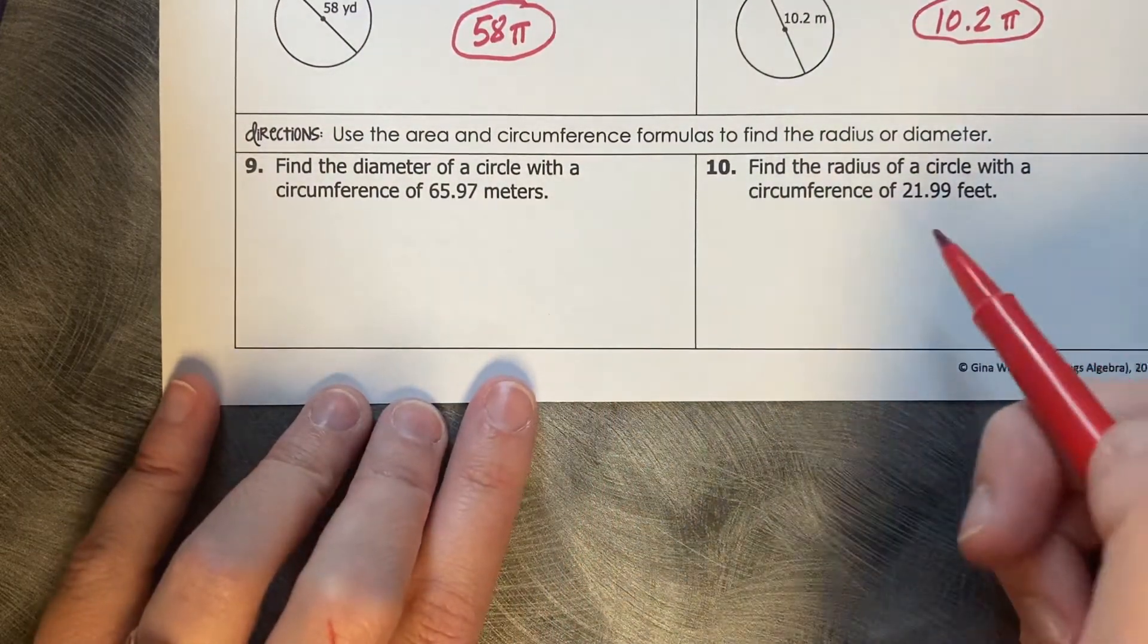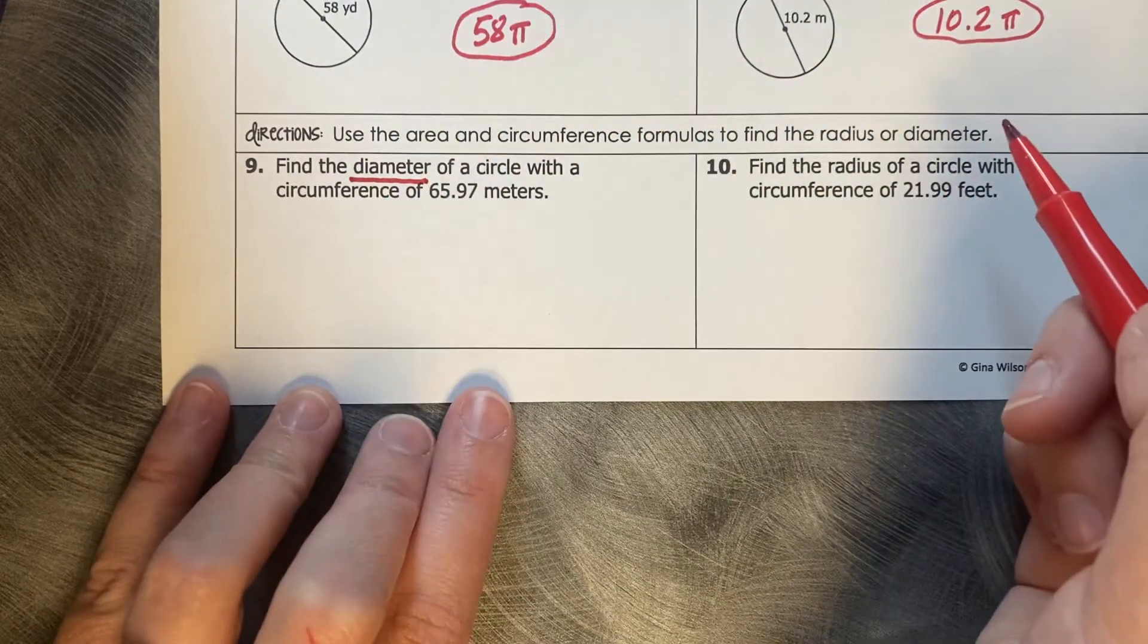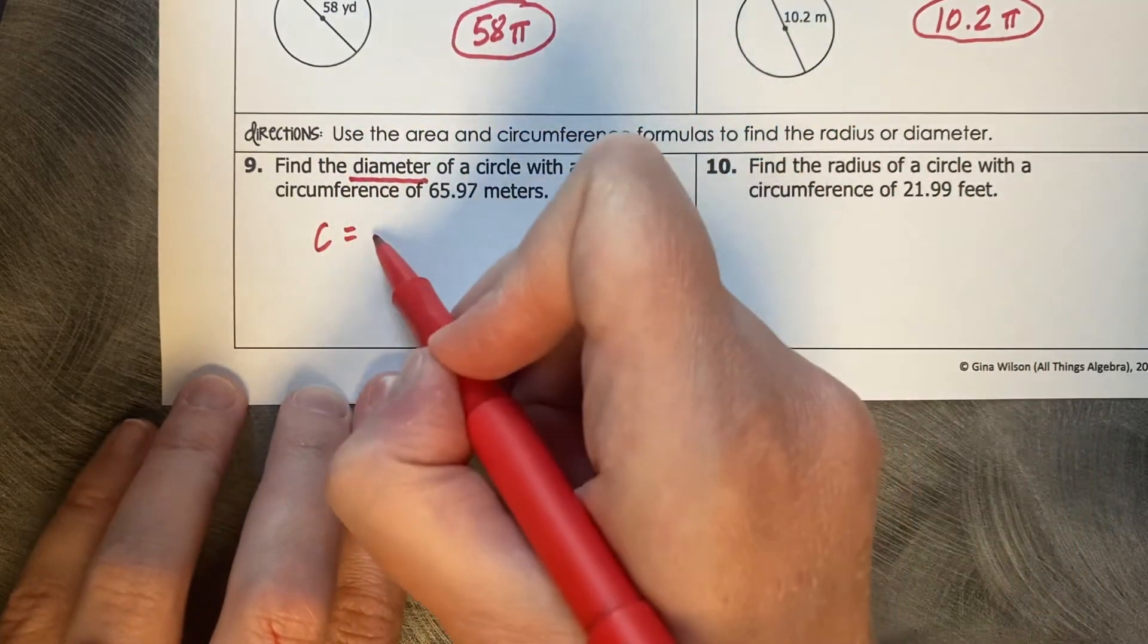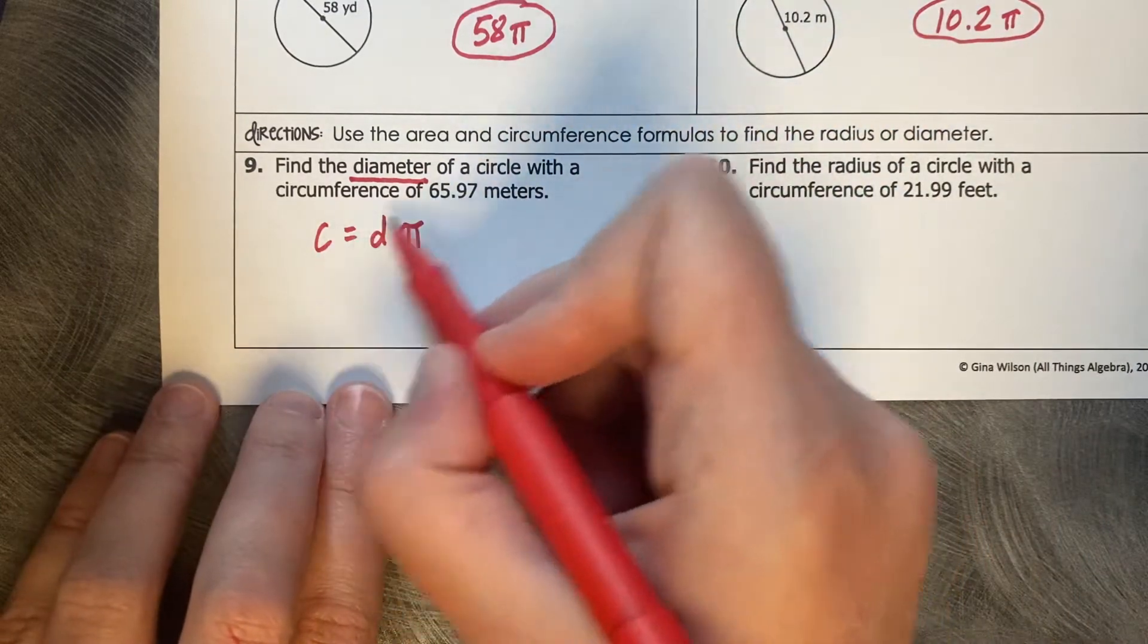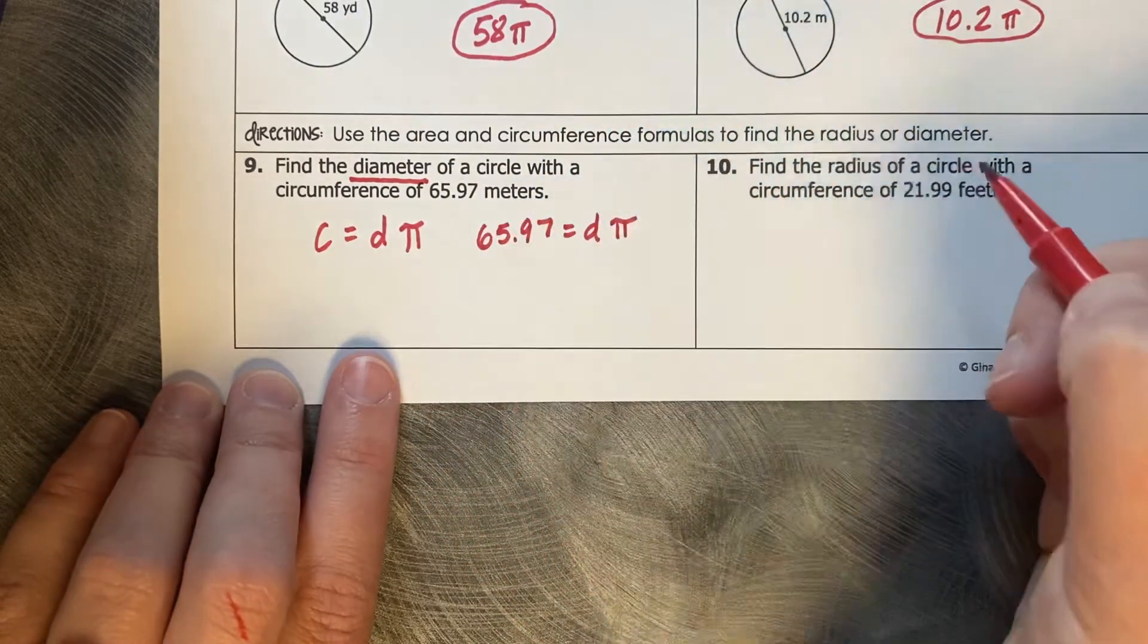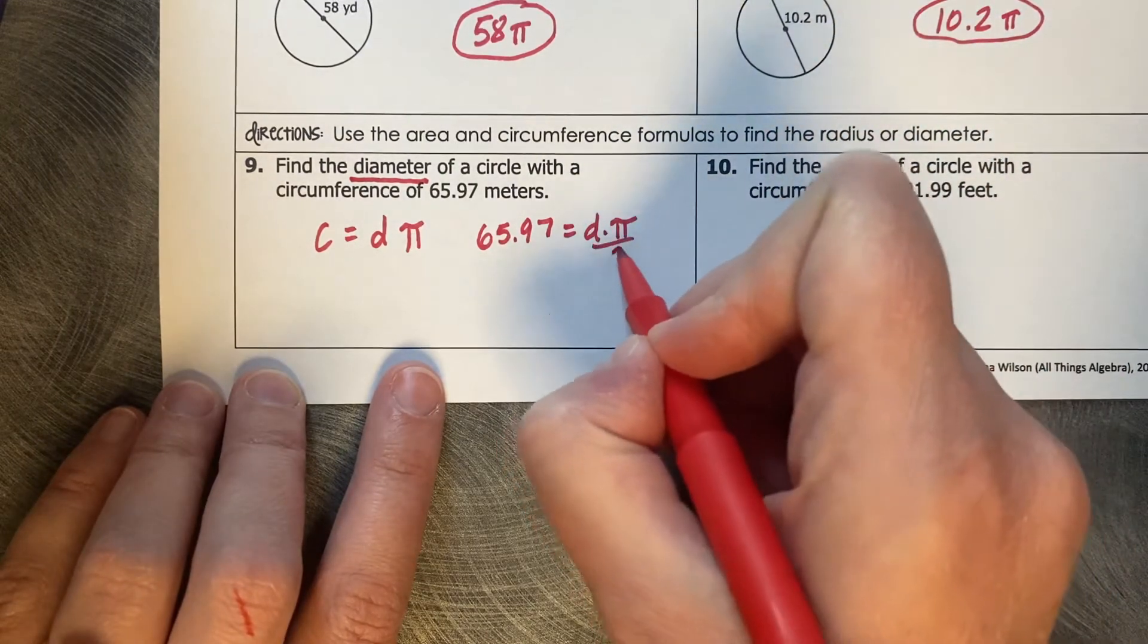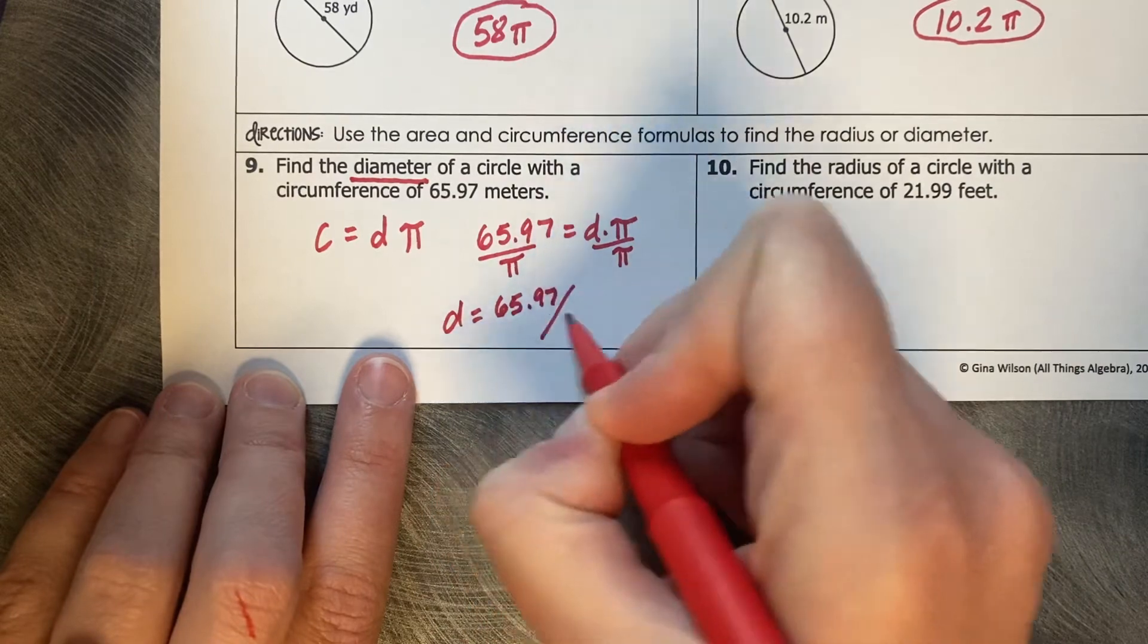Use the area and circumference formulas to find the radius or the diameter. Find the diameter of a circle with a circumference of 65.97 meters. So working backwards, we can say that circumference equals diameter times pi. Because I want a diameter, I can use the diameter one. So now I replace the circumference with the value I know: 65.97 equals diameter times pi. And then remember that pi is just a number, and I want the diameter by itself. So how are these joined? With a multiplication. So to undo multiplication, we divide both sides by pi. So an exact answer here is going to be 65.97 divided by pi.